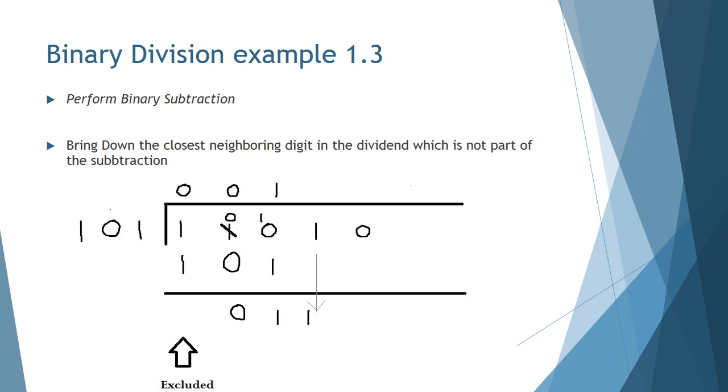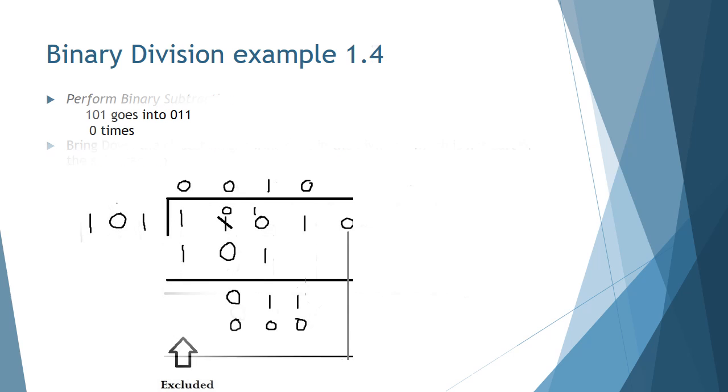The next step is to bring down the closest neighboring digit in the dividend, which is not part of the subtraction. So in this case, that is 1. So we bring down the 1 from the dividend, and move on to the next step. Next, we ask, how many times can 1-0-1, our divisor, go into 0-1-1? The answer is 0, and so we add a 0 to our quotient.